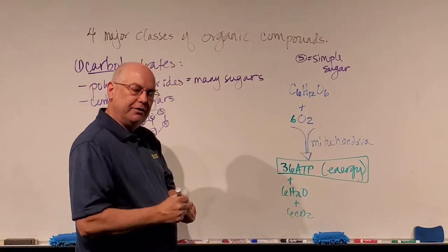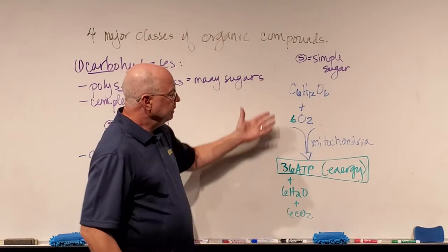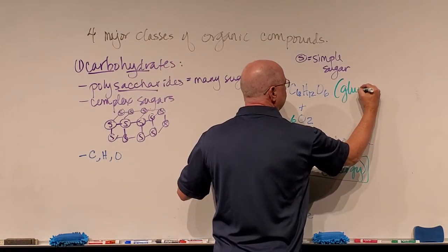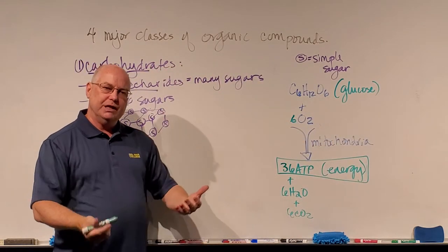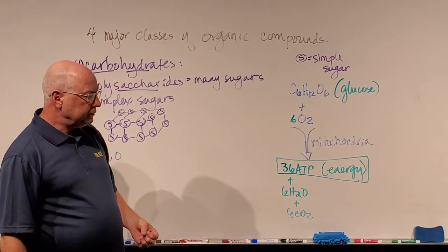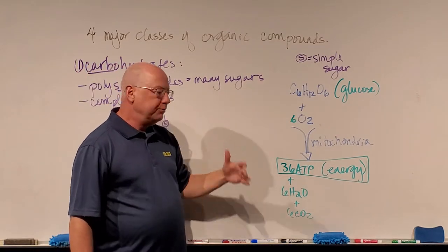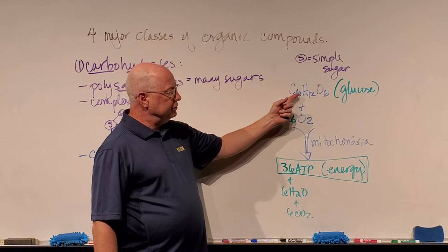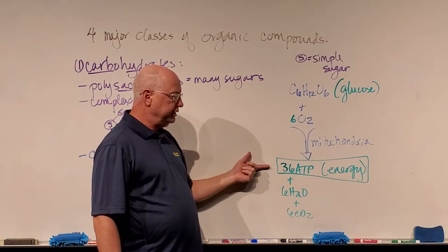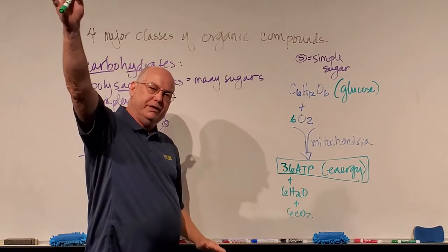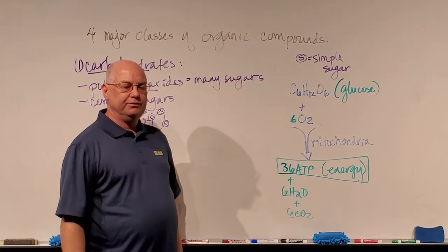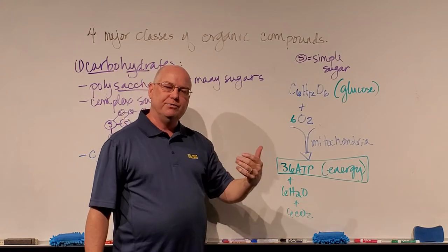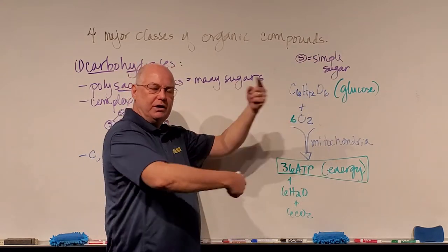We want as much energy out of one molecule of glucose or simple sugar as we can possibly get. There are three simple sugars with this combination — one is glucose, which we'll primarily discuss. Glucose is one of the most abundant simple sugars in nature that our cells convert into energy. There's also fructose and galactose with the same formula, but the chemistry differs. The carbon dioxide produced is what we exhale, and the oxygen we take in is what we inhale. Trees inhale our carbon dioxide and exhale oxygen — a symbiotic relationship.